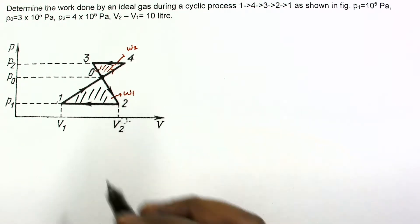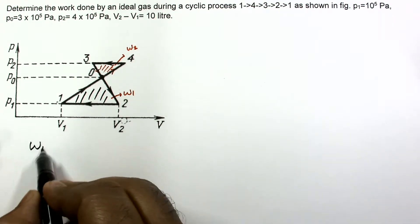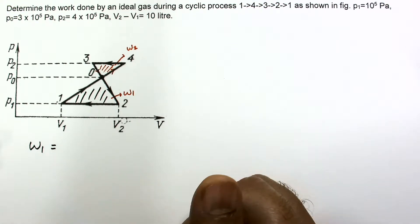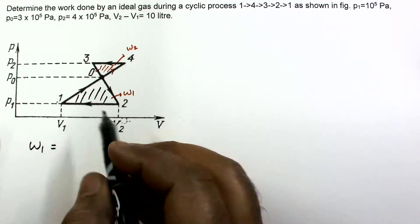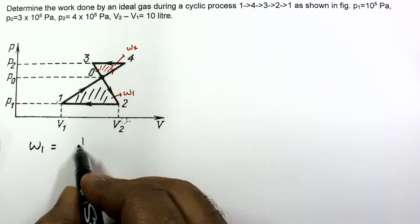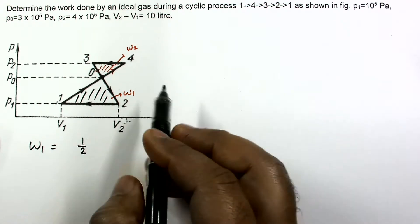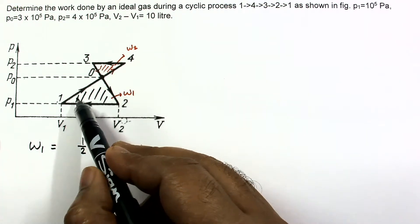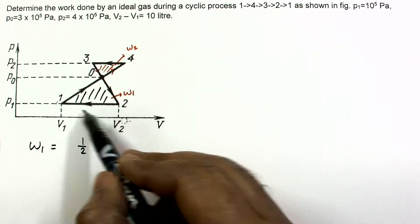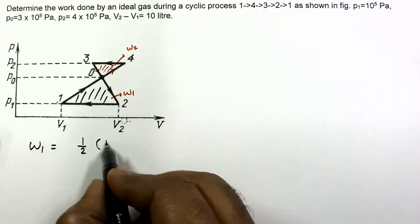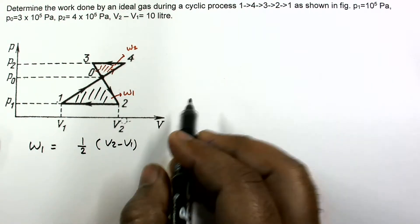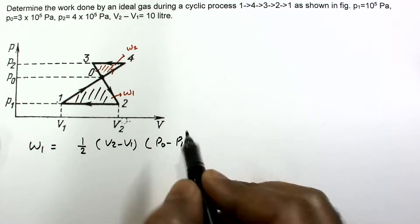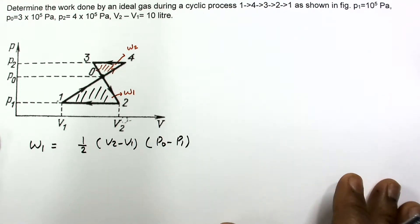For W1 we can write, work done in process number 1, it is positive and it is half. This height is P0 minus P1 and this base is V2 minus V1, so it is V2 minus V1 multiplied by P0 minus P1, and it is a positive work.